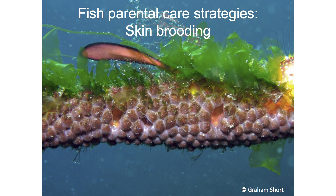Another strategy is skin brooding, where the larvae actually hatch in the skin and are kept there by the parent. In addition to the idea that it's really horrifying to imagine bursting out of your parent's skin when you're born, the larvae when they come out are often underdeveloped because the parent can't hold them in the skin for very long, so the larvae are vulnerable to predation — and also it's just really gross.